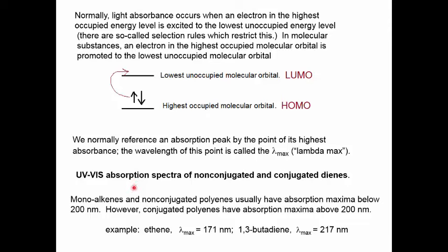Let's now compare the lambda max of compounds with single or isolated pi bonds to polyenes with conjugated pi bonds. For example, we'll take ethene. It has one carbon-carbon double bond. The lambda max for it is observed at 171 nanometers. Compare that with the lambda max for a conjugated diene, 1,3-butadiene. The lambda max is 217 nanometers. For the conjugated diene, the lambda max is at a higher value — a longer wavelength than we see for the alkene with a single double bond.